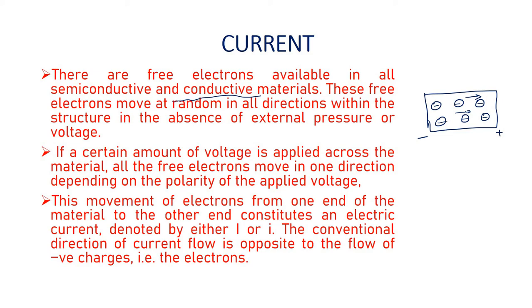So this is the flow of electrons. If a certain amount of voltage is applied across the material, all the free electrons move in one direction, depending on the polarity of applied voltage. This movement of electrons from one end of the material to the other end constitutes electric current. This is denoted by I or small i.